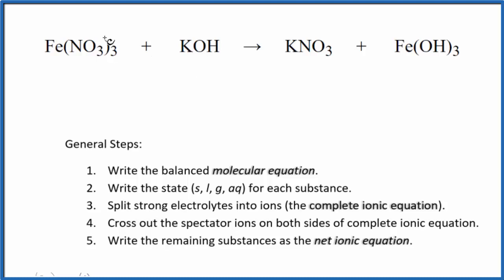I can see that I have 3 nitrate ions here and only 1 here. So I'm going to put a 3 in front of the KOH. Now they're balanced, but I have 3 potassium ions. Let's put a 3 here. That gives me 3 hydroxides. That's fine because I have 3 hydroxides right here and then 1 iron on each side. So this is the balanced molecular equation.